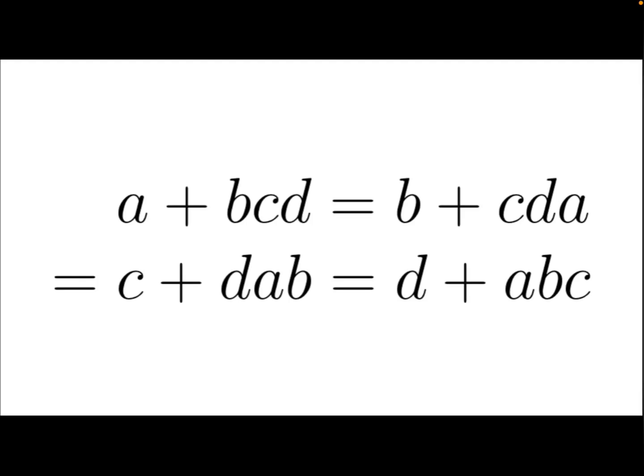In this video, we are going to find 4 real numbers A, B, C, and D, such that no matter which number I pick and I add the product of the other 3 numbers, the sum is constant.